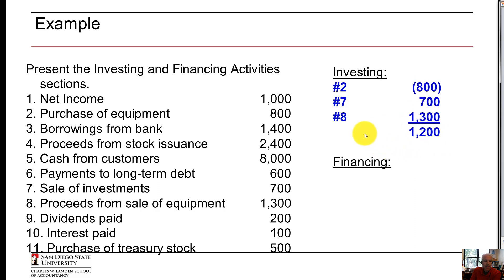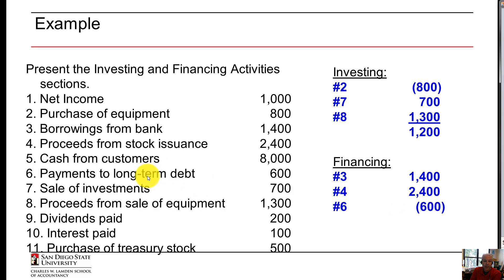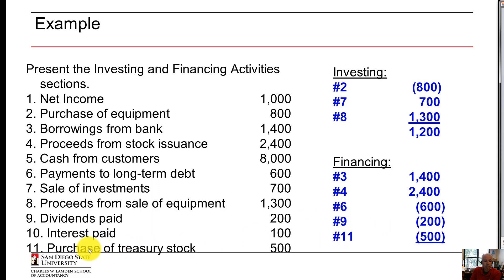For financing: borrowing from the bank is an inflow. Proceeds from stock issuance is another inflow. Payments to long-term debt is an outflow. Dividends paid is another financing cash outflow — a negative number. Purchasing treasury stock is also an outflow. Sum them up and we have a net inflow of $2,500.